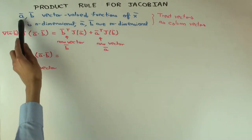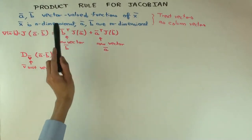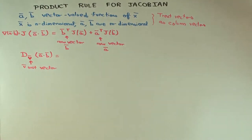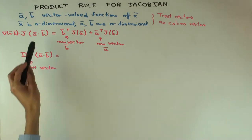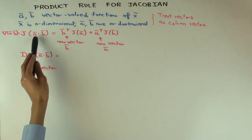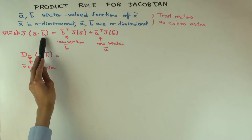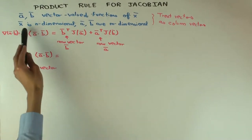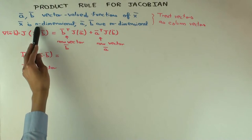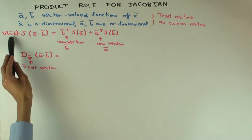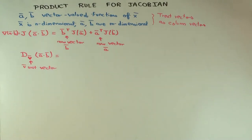So a and b are both functions, so each coordinate of these is a function of all n variables. Now a dot b will be what kind of thing? It will be a real valued function of n variables. So you can take its gradient vector, and the gradient vector you can think of it just as the Jacobian, it's a type of Jacobian.